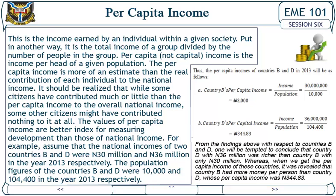Per capita income is the income per head of a given population. The per capita income is more of an estimate than the real contribution of each individual to the national income. It should be realized that while some citizens have contributed much or little compared to the per capita income to the overall national income, some other citizens might have contributed nothing to it at all. The values of per capita income are a better index for measuring development than those of national income.